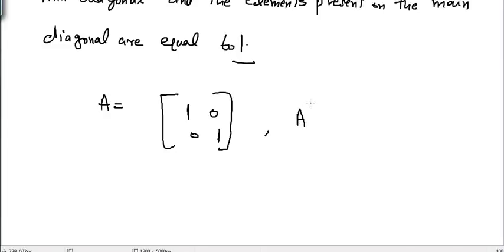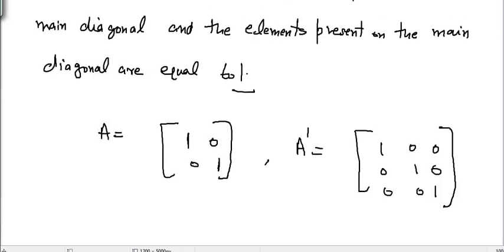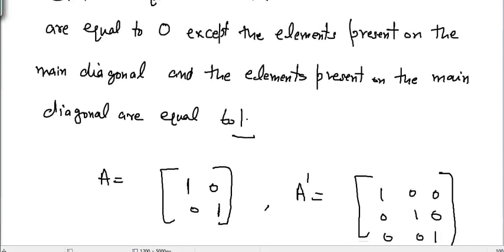Let's take another example. If I have A' equal to one zero zero, zero one zero, zero zero one — this is also an example of a unit matrix. All the elements present on the main diagonal are equal to one and the rest of the elements are equal to zero.